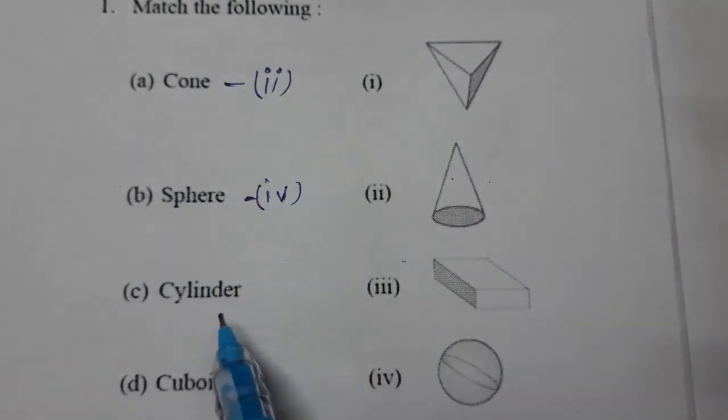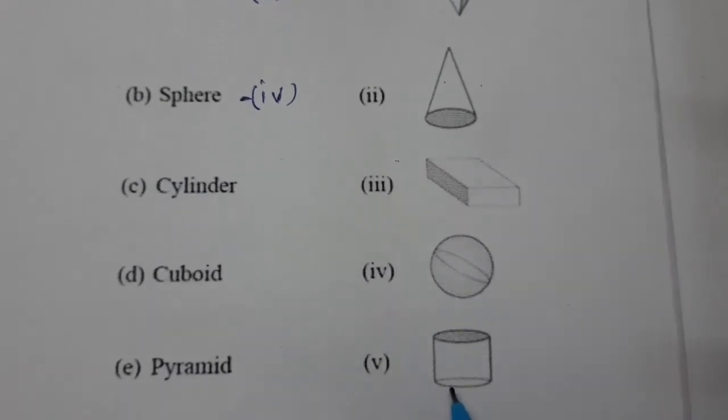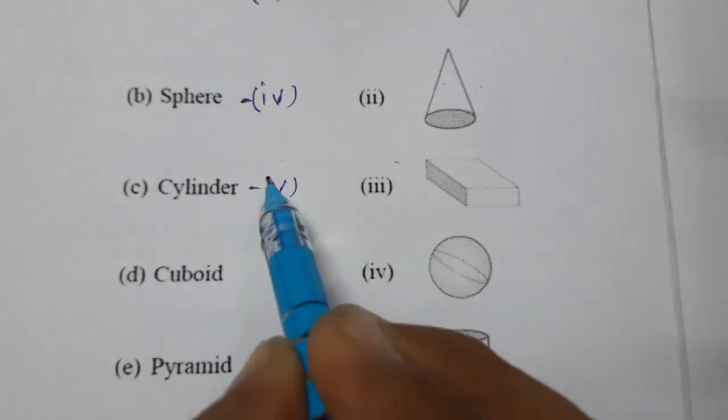Then see cylinder. Check cylinder, where the cylinder? Yes, here it is the cylinder, 5th part, so 5th one is cylinder.